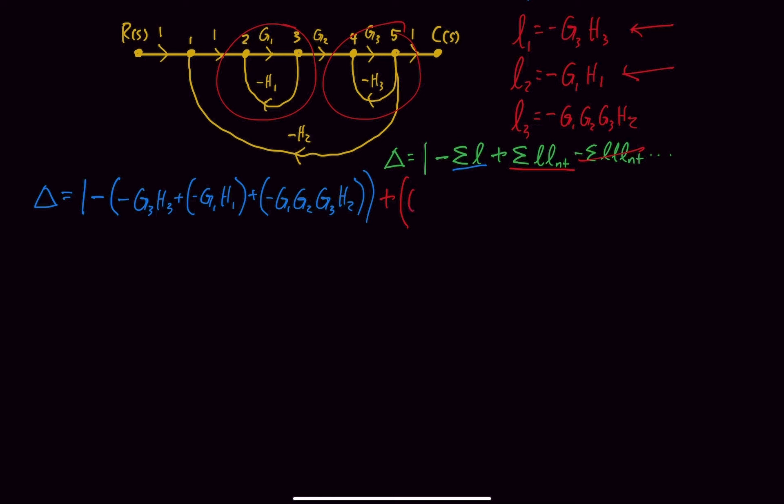Plus, so I'm going to multiply the two loops that aren't touching. So let me pick this one and this one because they're not touching here. So multiply it together, that would be negative G3 H3 times negative G1 H1. Let's simplify this. This turns into 1, if we distribute this negative all across, plus G3 H3 plus G1 H1 plus G1 G2 G3 H2 plus, these two negatives cancel out, G3 H3 G1 H1. So this is our delta.